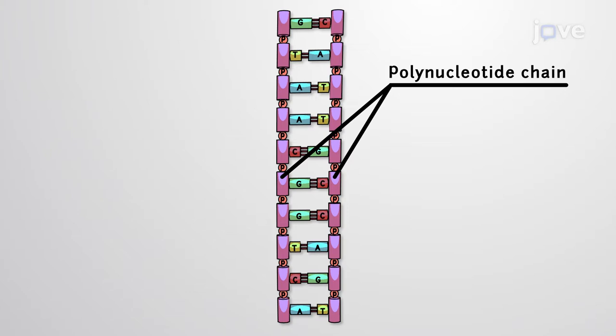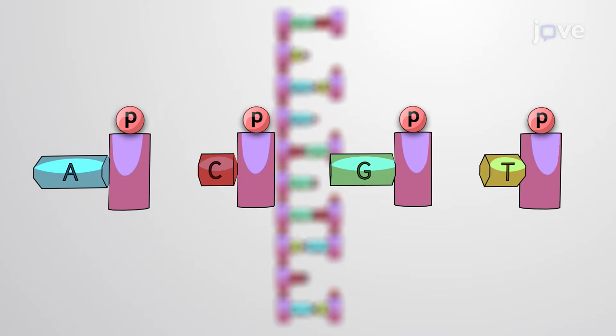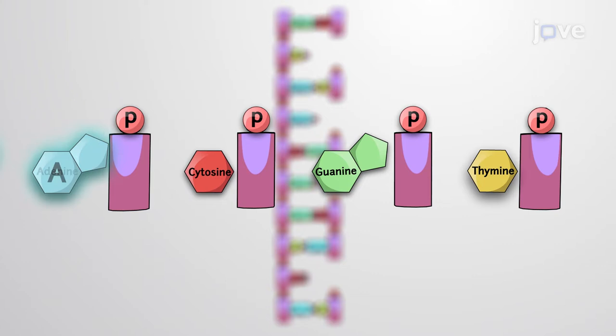Deoxyribonucleic acid, or DNA, consists of two polynucleotide chains. Each one is made up of four types of nucleotide subunits, which consist of a single phosphate group and a nitrogen-containing base.